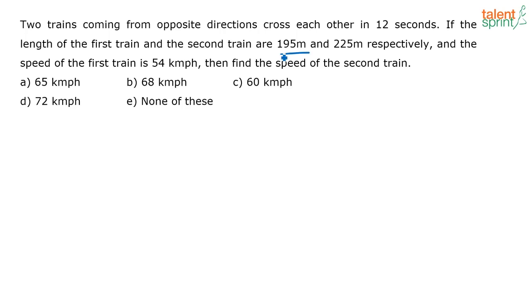So basically you have two trains here - 195 and 225 meters. What is the total length of both the trains? It is nothing but 195 plus 225, that is 420 meters will be the length of both the trains, L1 plus L2. Now this is how many kilometers? 0.42 kilometers.